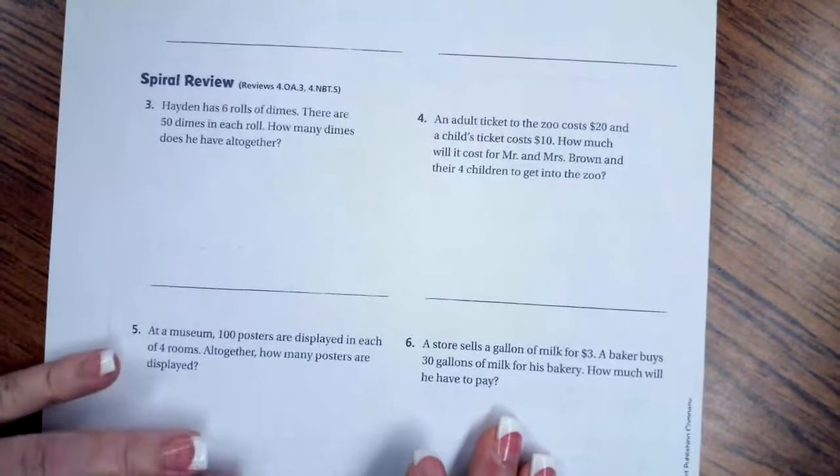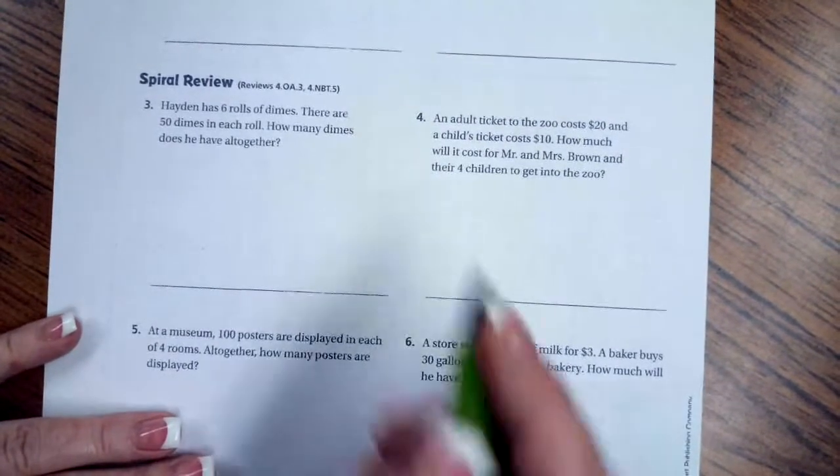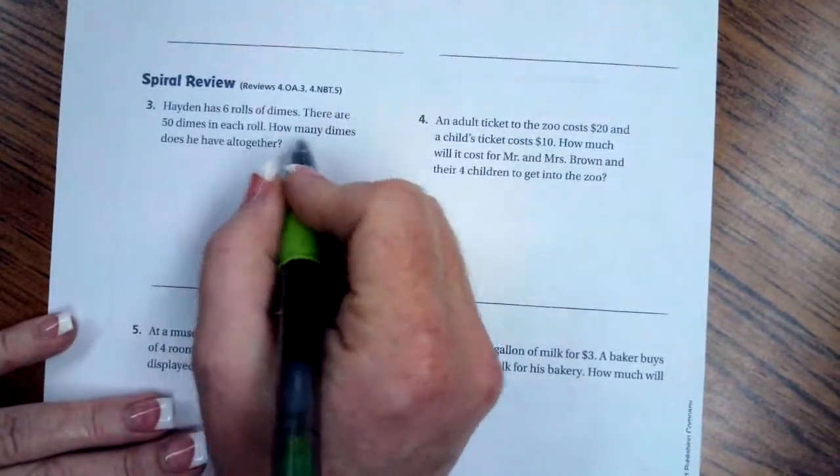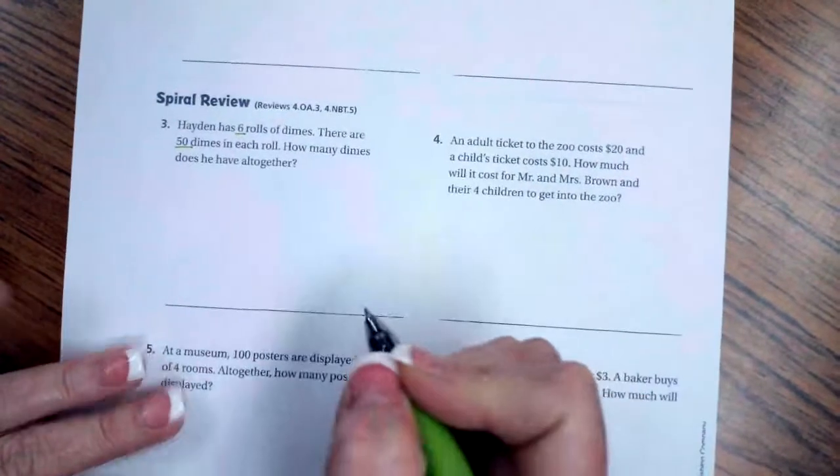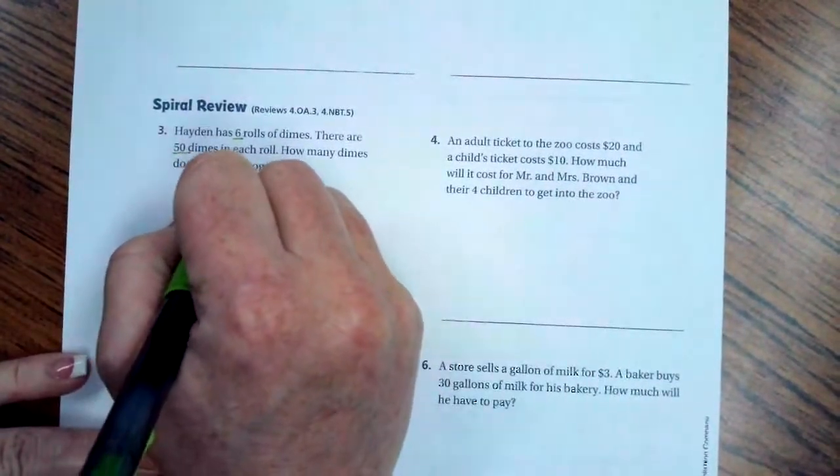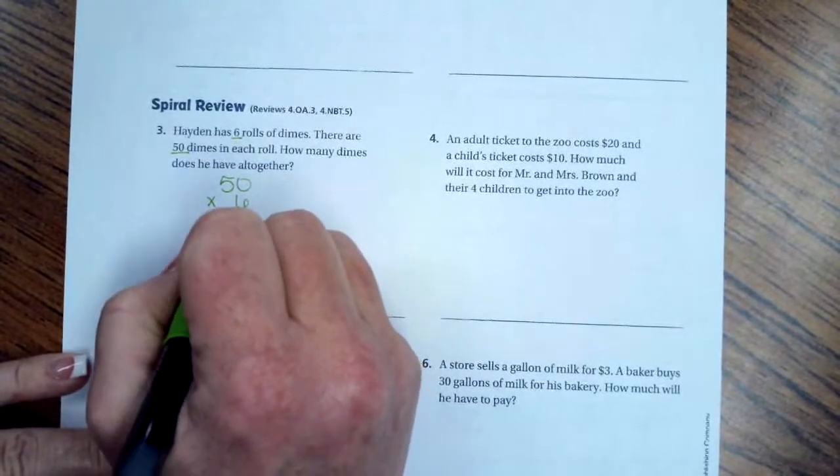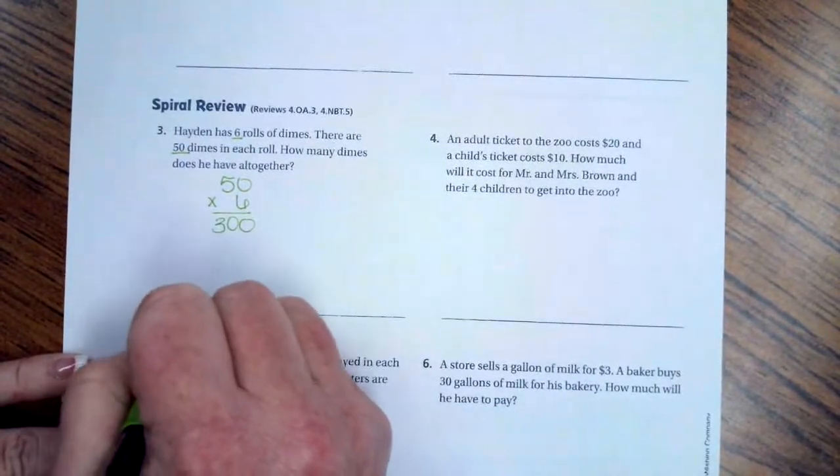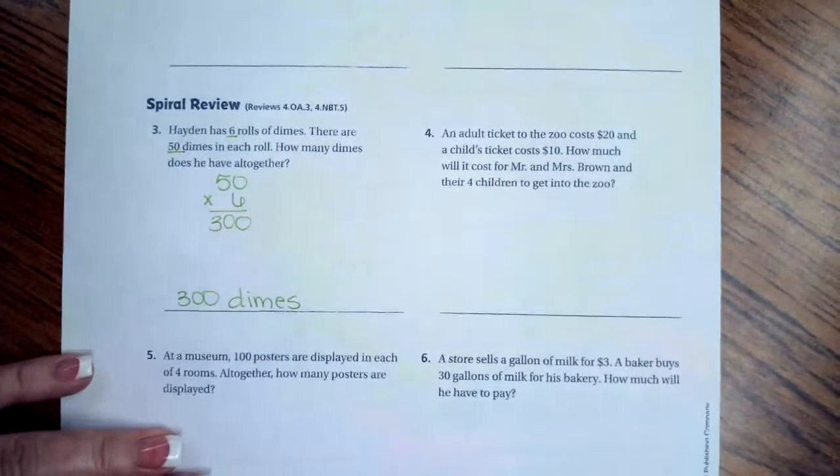Spiral review. Hayden has 6 rolls of dimes. There are 50 dimes in each roll. How many dimes does he have all together? So, we have 6, we have 50. So, 50 times 6, 6 times 0 is 0, 6 times 5 is 30. 300 dimes.